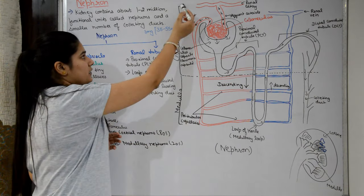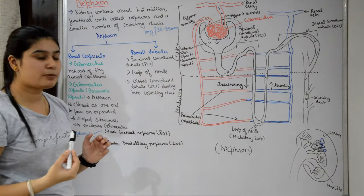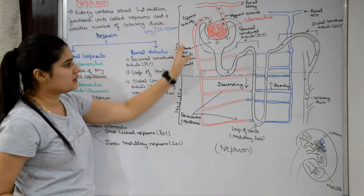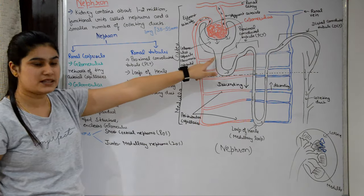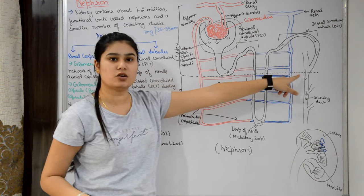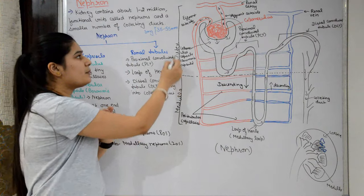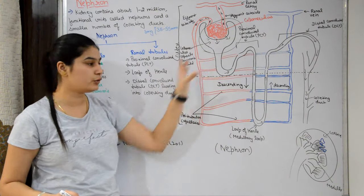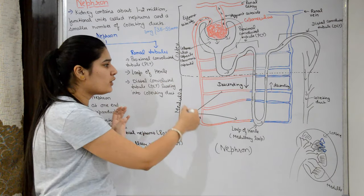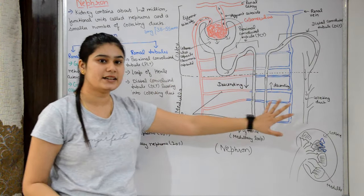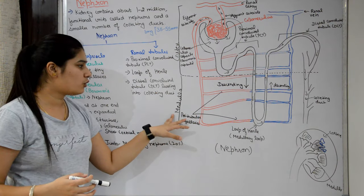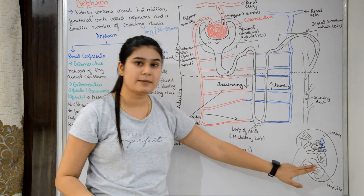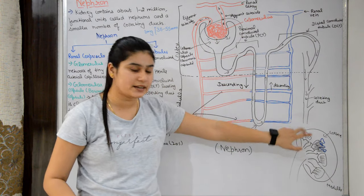The Bowman's capsule, proximal convoluted tubule, and distal convoluted tubule are present in the outer cortex of the kidney. The loop of Henle and collecting ducts are located in the inner medulla region of the kidney.